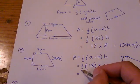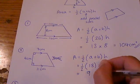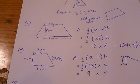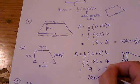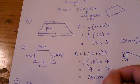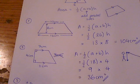So now I want to do half of 18 and then I need to times that by 4 which gives me 36 centimetres squared.